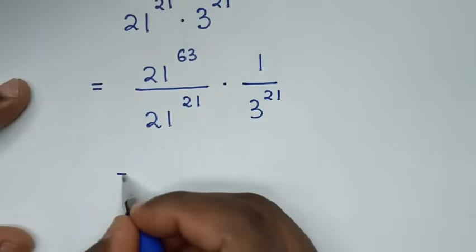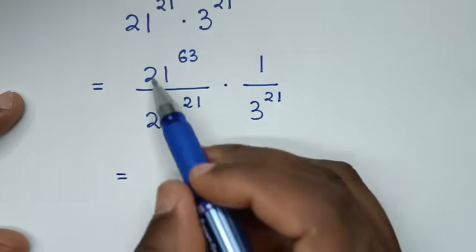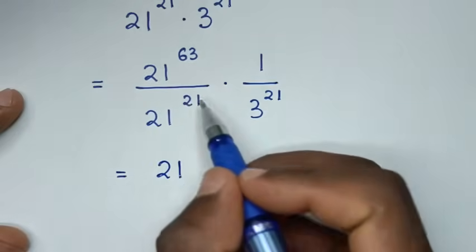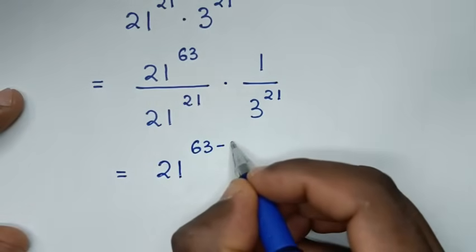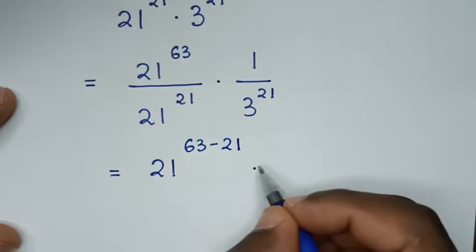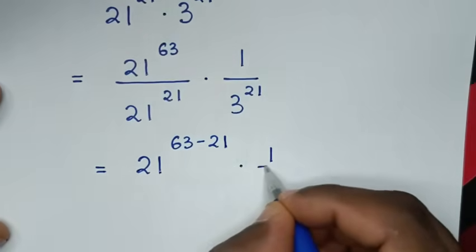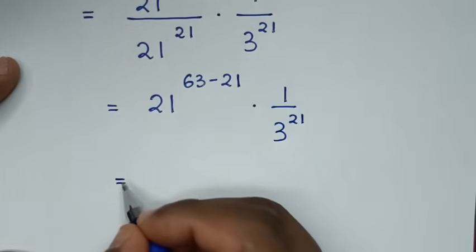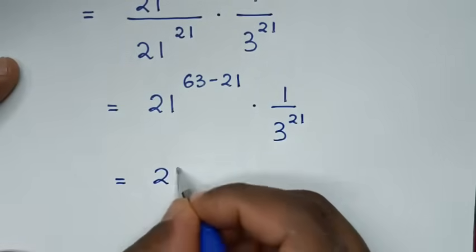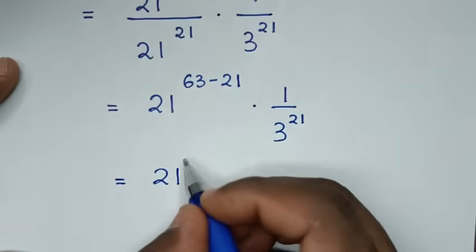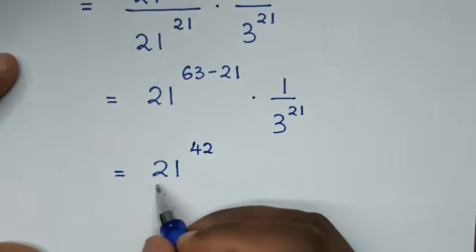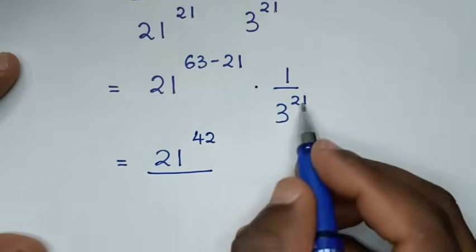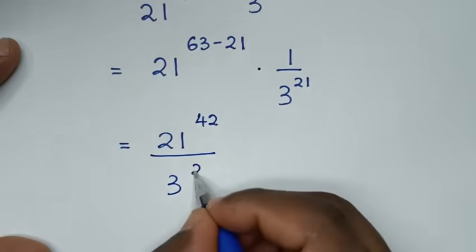Then it will be equal to: division of exponent with same base 21 but different powers, so we'll take the same base of 21 and subtract the powers — 63 minus 21 — times 1 over 3 power of 21. That gives us 21 power of 42 over 3 power of 21.